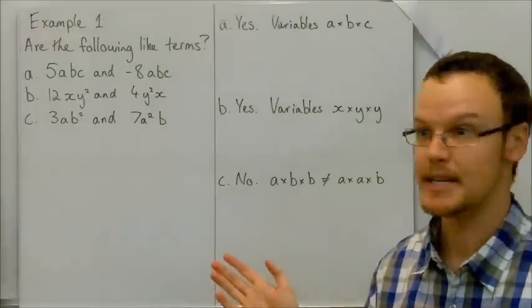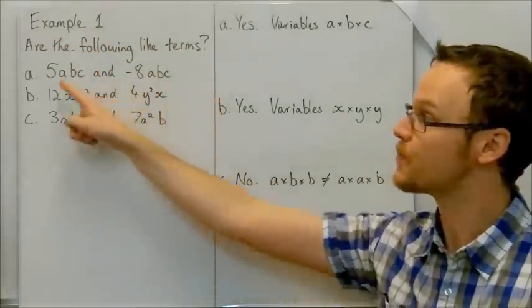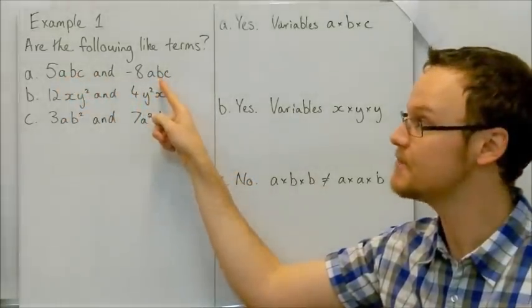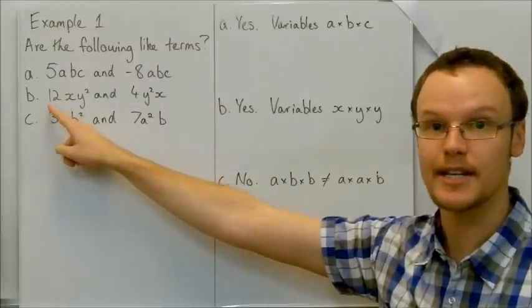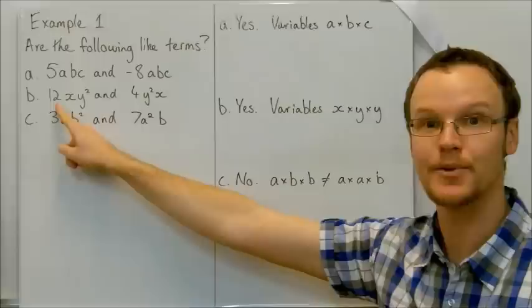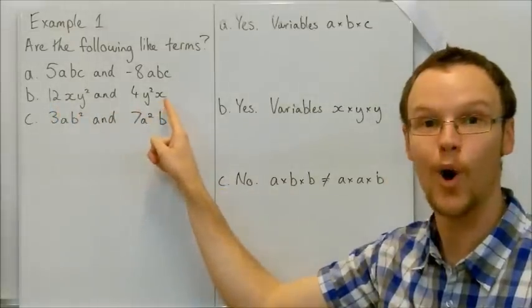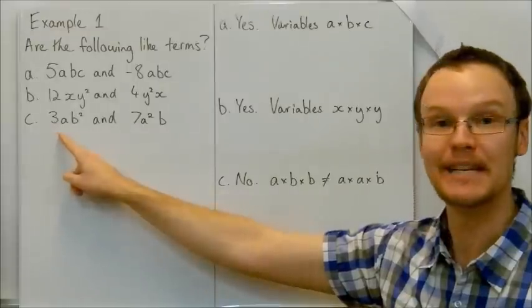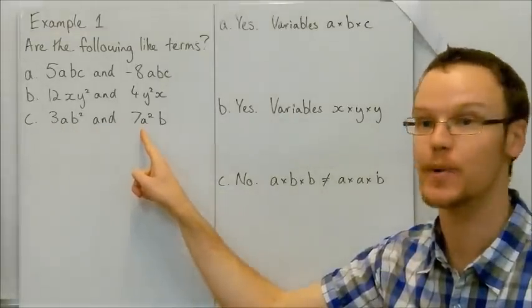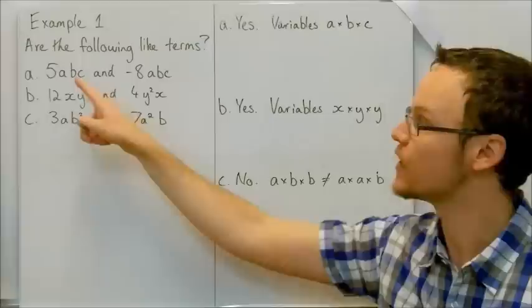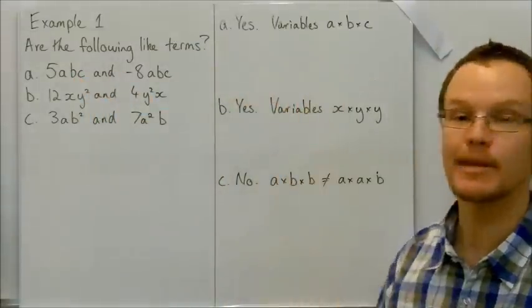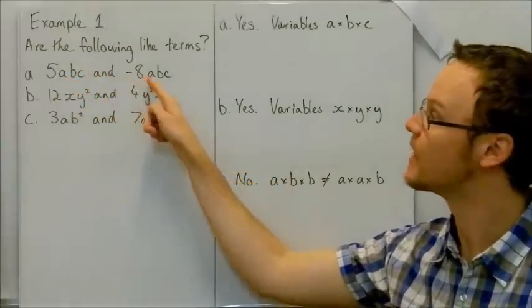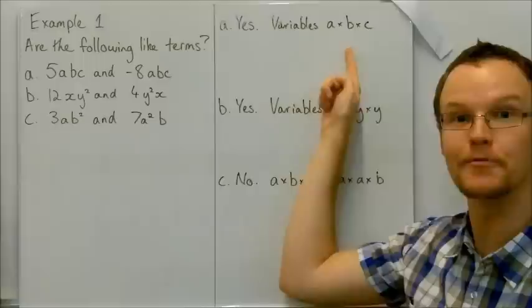So looking at some examples, are the following like terms: 5abc and negative 8abc. Here's our second example here. 12xy squared and 4y squared x. Here 3ab squared and 7a squared b. So are the first two like terms, yes, because they've got the same combination of variables. a times b times c. a times b times c. They have the same combination of variables.